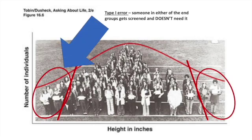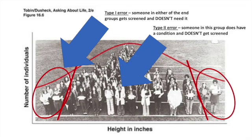A type 1 error is when someone in this screened group is actually completely normal. Height is a prime example — people can be short for whatever reason, it can be completely normal and doesn't mean they have some medical condition that needs treating; it can just be a normal variation in our population. A type 2 error is someone in the middle group who does have an endocrine abnormality but isn't picked up or screened, because we've used this crude data analysis to define our screening criteria.